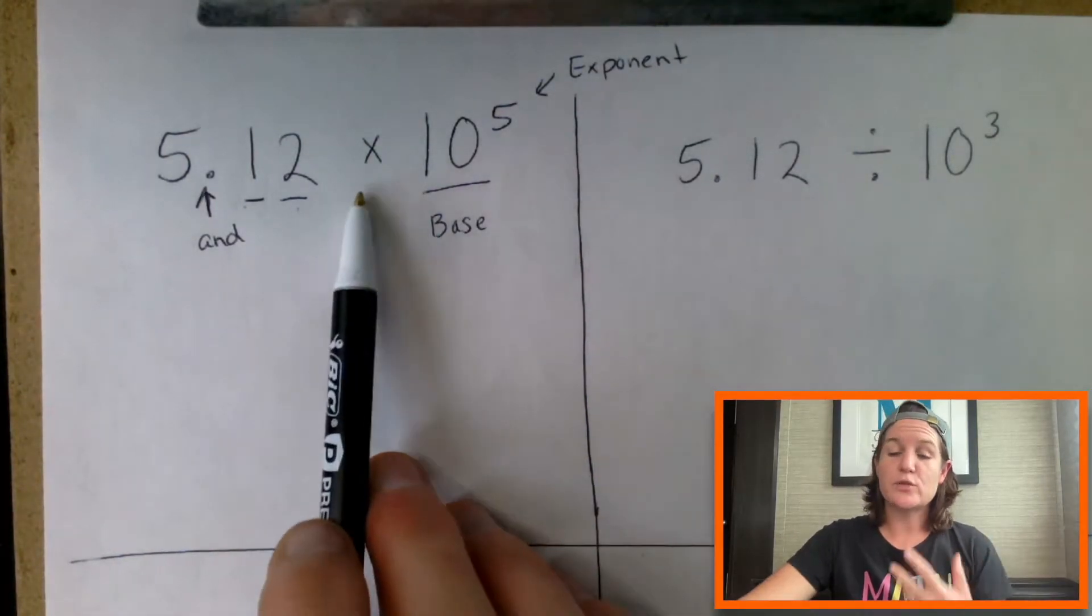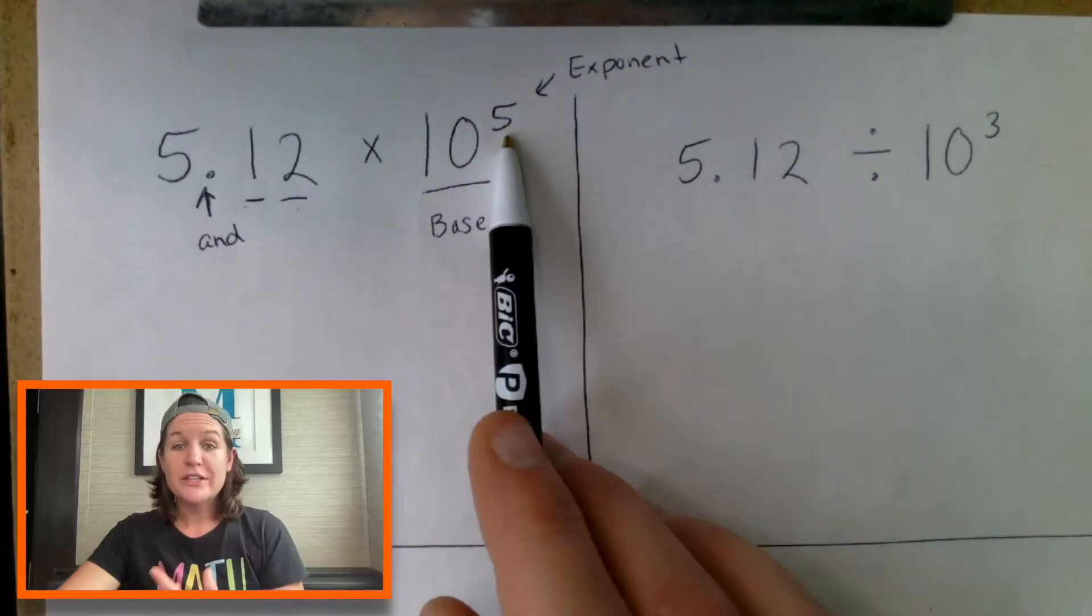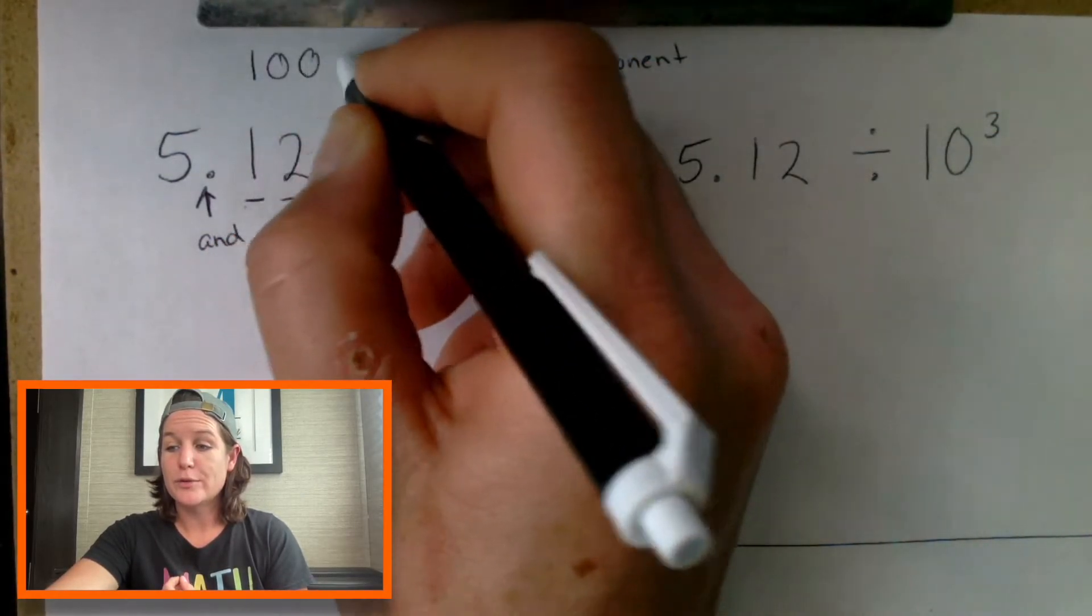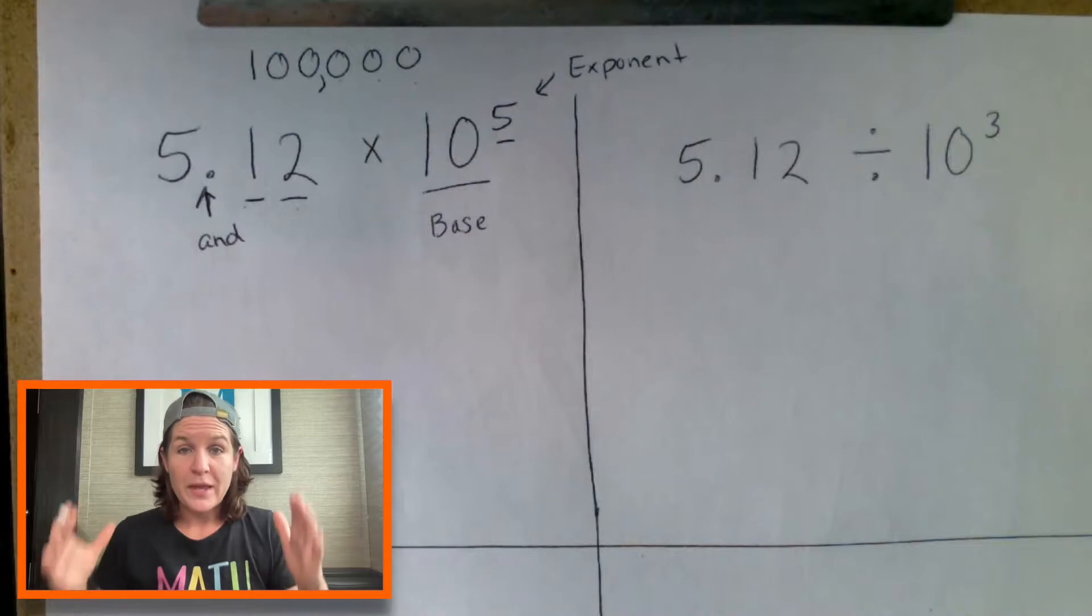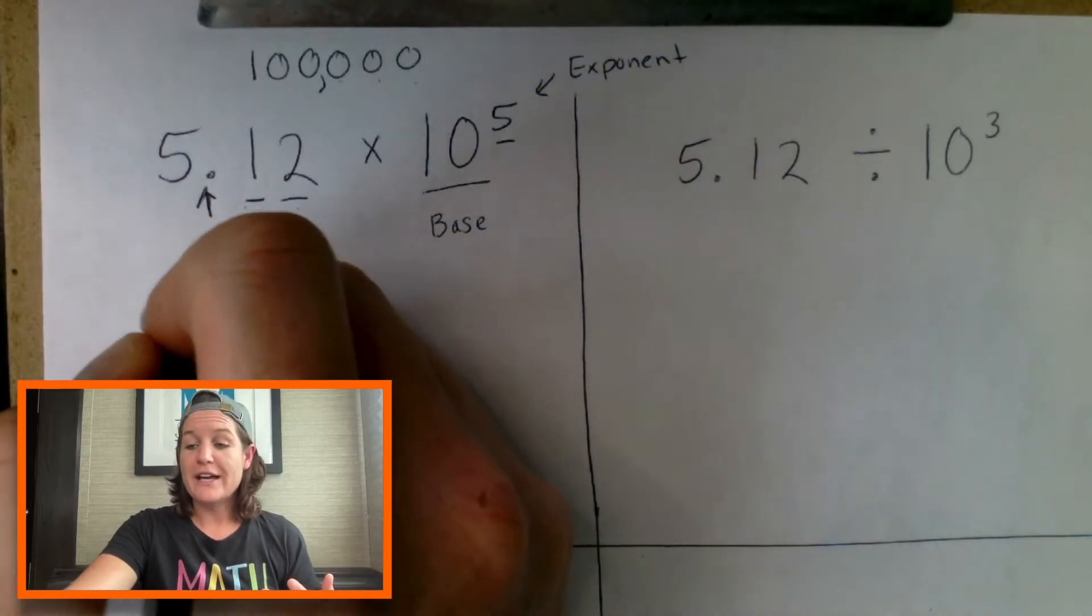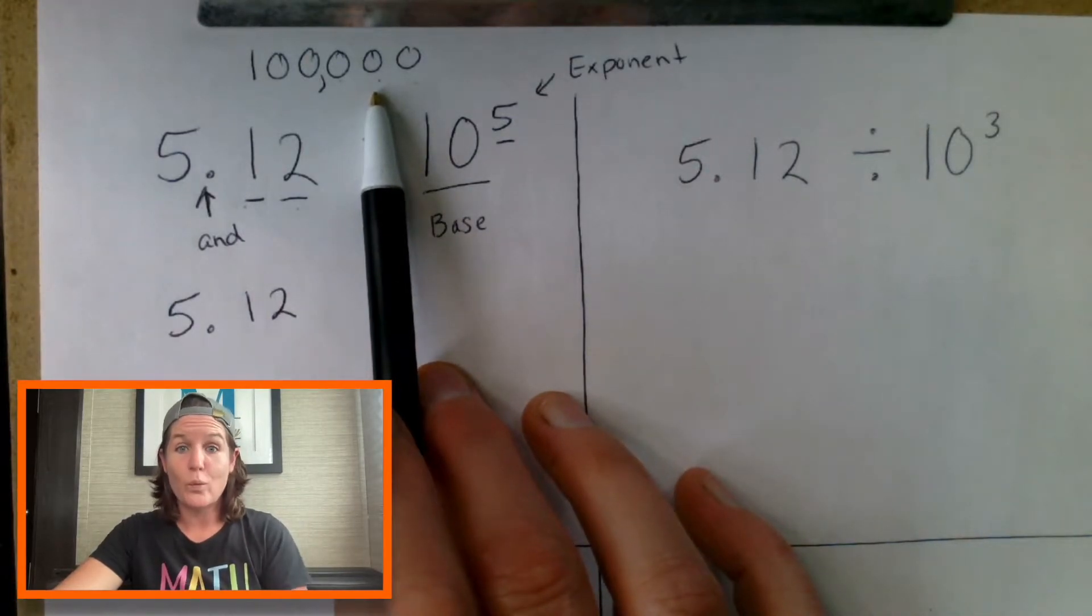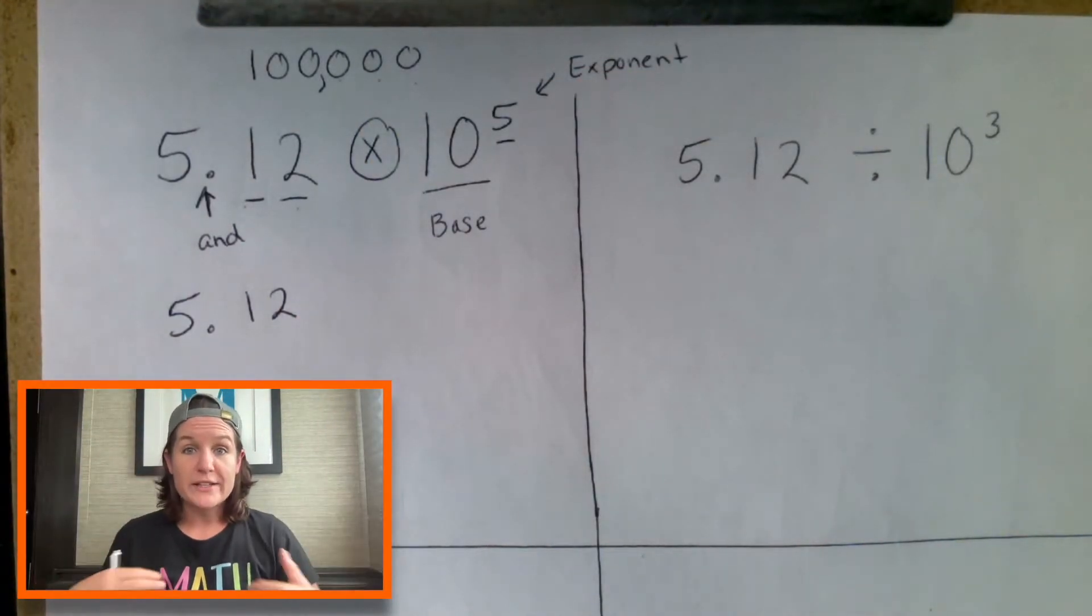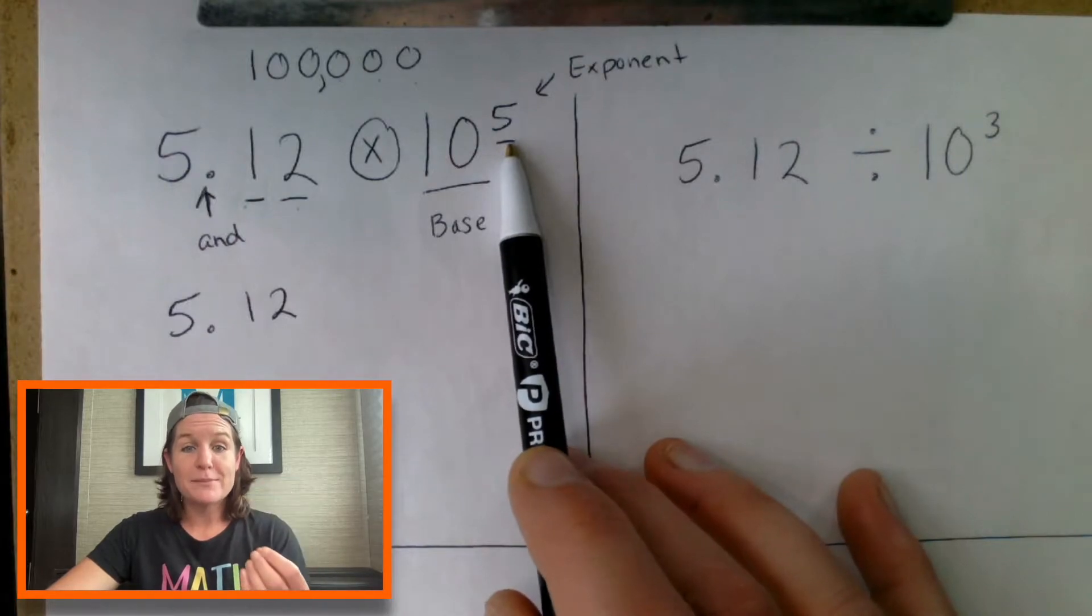We're finding the product because we are multiplying. So really this 10 to the power of five stands for a one with five zeros on it: one, two, three, four, five, which is the same as 100,000. This means that we're shifting our decimal. If we have five and 12 hundredths and we're multiplying by a huge number that's greater than one, it means that we are making it greater. Because we're multiplying, we shift our decimal to the right to make the value greater.